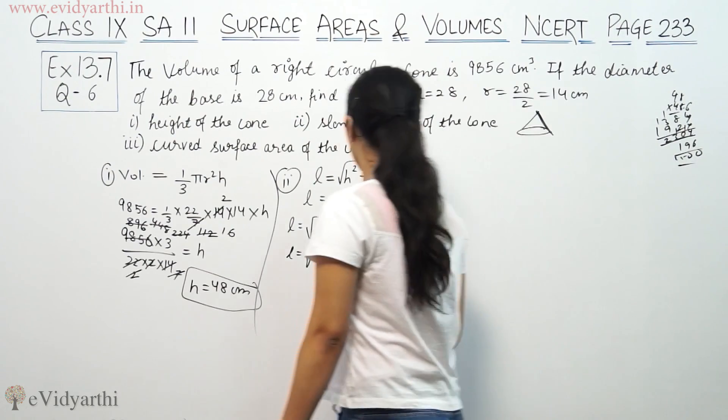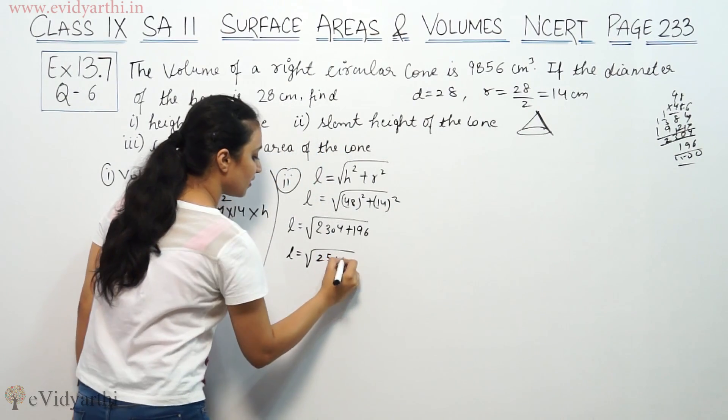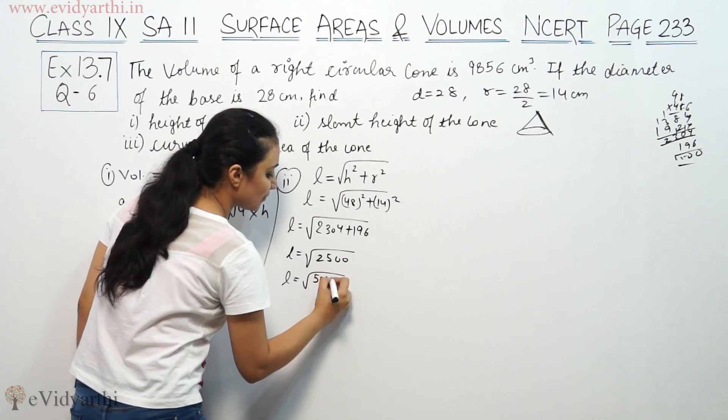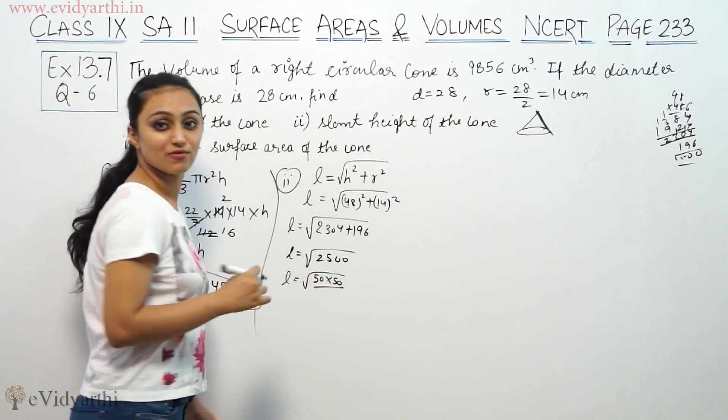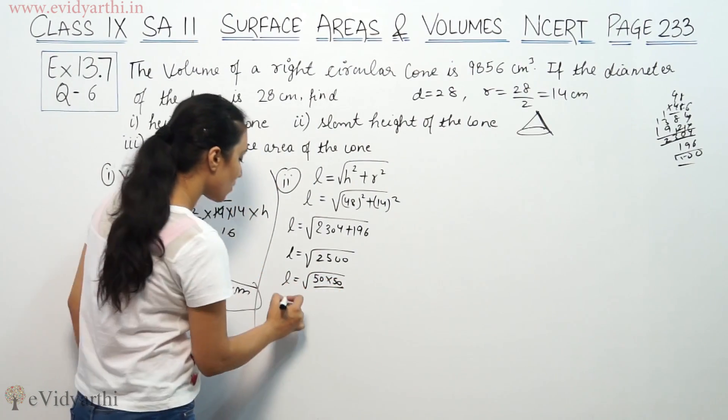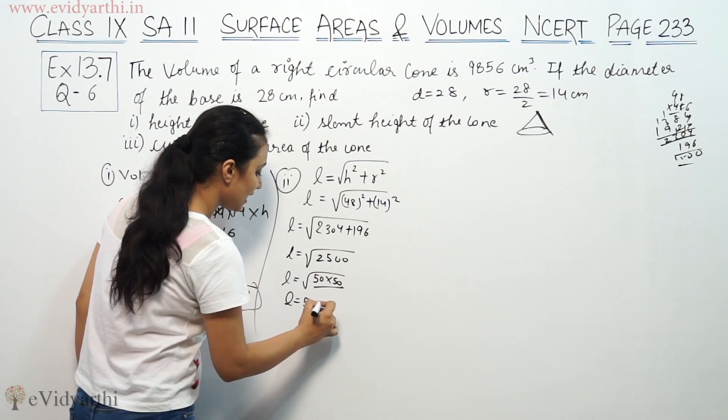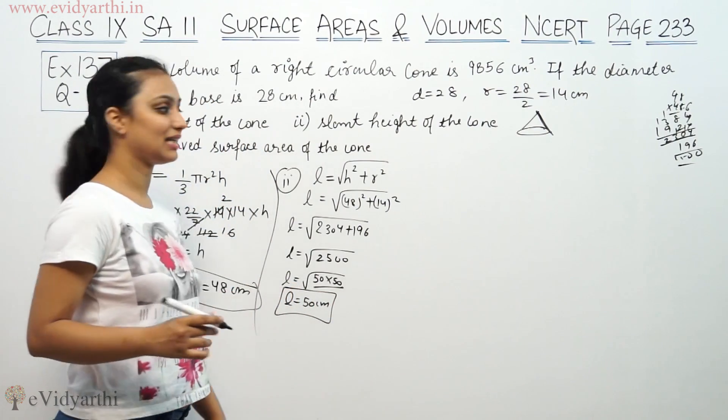So this is 2500. This is 2500, 50 × 50. 50 × 50, so that means L is 50 centimeters. This is the slant height.